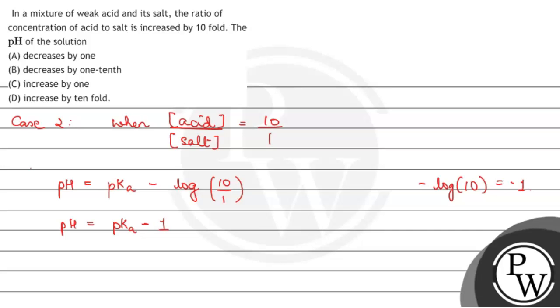Okay, so the value is decreasing by 1. We can say that in a mixture of weak acid and its salt, the ratio of concentration of acid to salt is increased by 10 folds, the pH of the solution decreases by 1. I hope you understood it well. Thank you and best of luck.